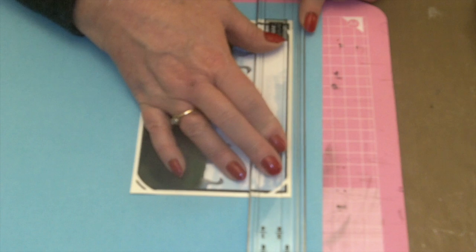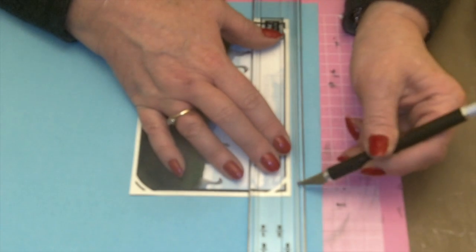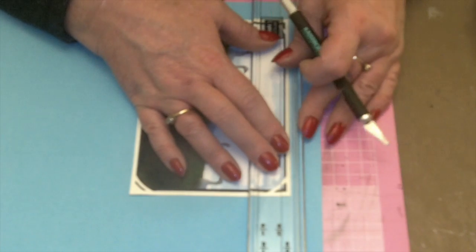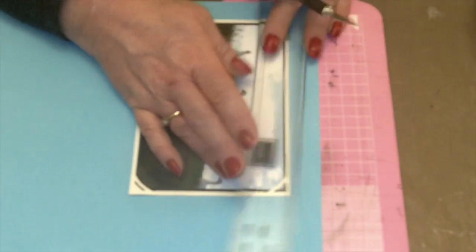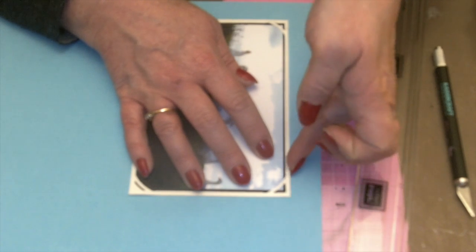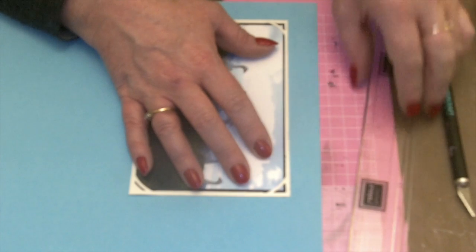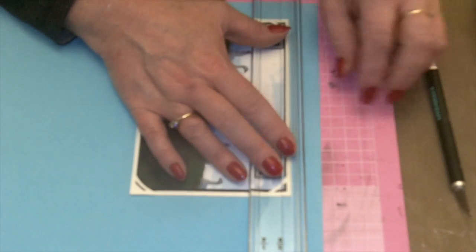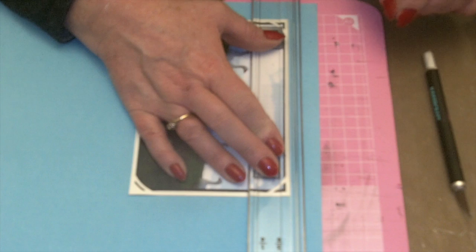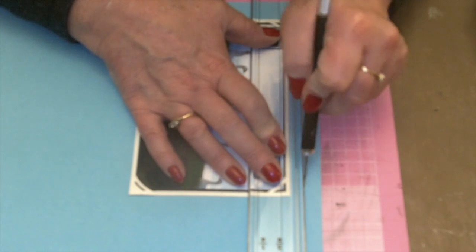Sometimes your ruler won't catch on your paper. Push it down, so little tip is just with your finger just run it along the edge to lift it up and then your ruler will catch. Good tip, cut away.